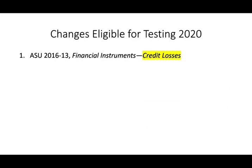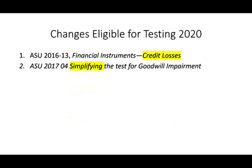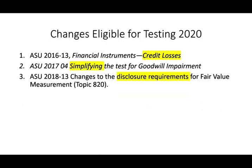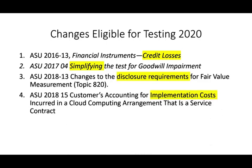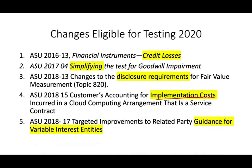The first thing I'm going to go over is the topics, starting with the financial instrument credit losses, ASU 2613, simplifying the test for goodwill impairment, changes to the disclosure requirement of fair value, how to account for the implementation costs when it comes to cloud computing, and targeted improvement to related party guidance for VIEs, variable interest entities.